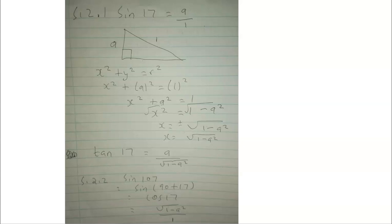The next question gave sin 17° equals a. Dividing by 1 to get a fraction, I drew my right-angle triangle and solved for the missing adjacent side using Pythagoras: x equals the square root of 1 minus a squared. Therefore tan 17° equals opposite over adjacent, which is a over the square root of 1 minus a squared. For sin 107°, I used the identity sin(90° plus 17°) equals cos 17°.